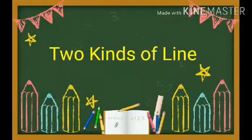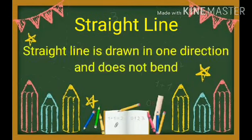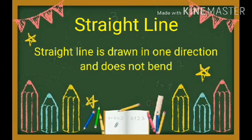And there's two kinds of lines. First is straight line. Straight line is drawn in one direction and does not bend.